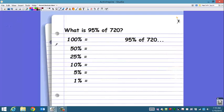Let's try another one. What is 95% of 720? Okay, let's go through our benchmarks. We know that 100% is 720. 50% will be half of that, so divide it by 2, 360. 25%, you could either divide 720 by 4, or you could take half of the 50% amount, which is 180.